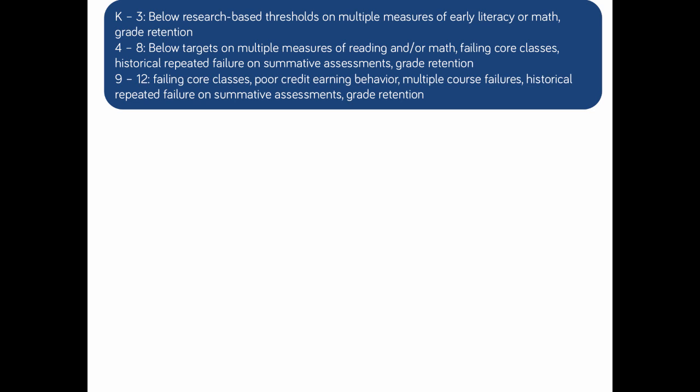In grades 4 through 8, academic risk can be determined by falling below targets on multiple measures of reading and/or math, failing courses, historical repeated failure on summative assessments, and grade retention. In grades 9 through 12, academic risk can be determined by failing core classes, poor credit-earning behavior, multiple course failures, historical repeated failure on summative assessments, and grade retention.